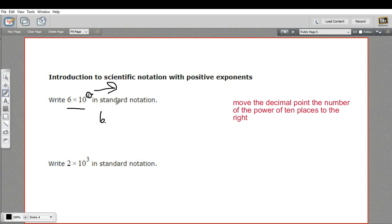So we'll talk about negative exponents another time. This is with positive exponents. So we're going to move it 4 spaces to the right. So 1, 2, 3, 4. So there's my decimal point. And then I just have to fill in all those spaces with zeros. So this is 60,000.